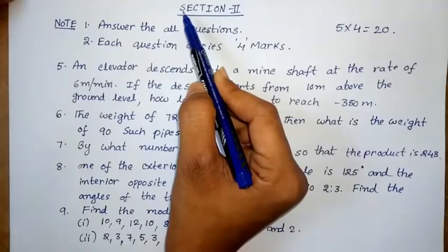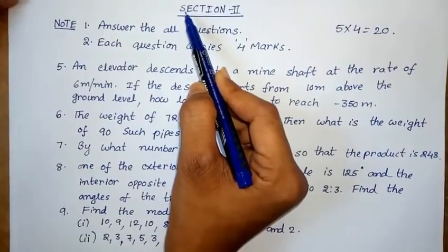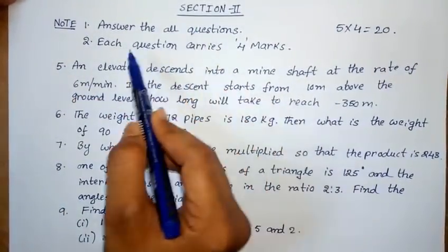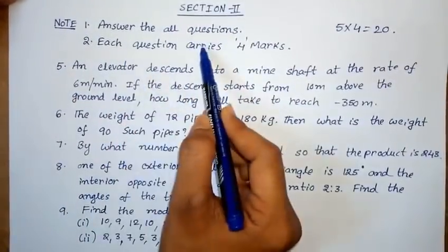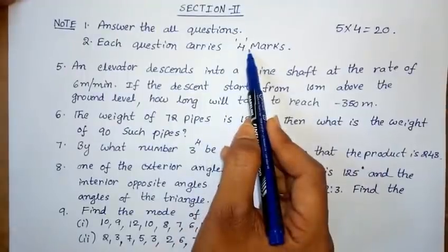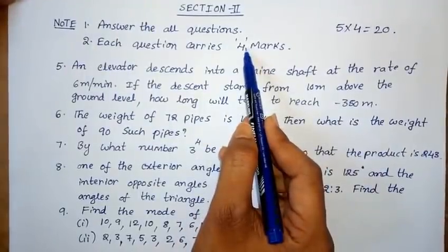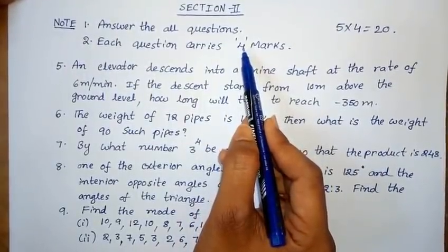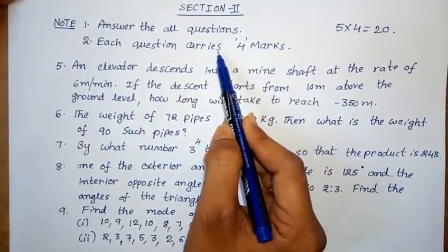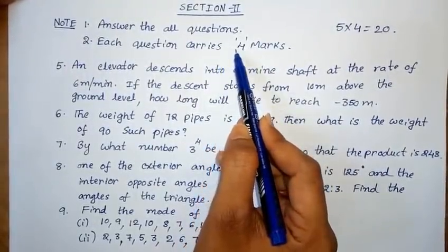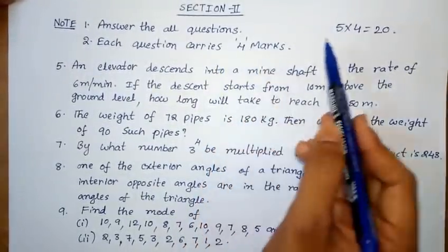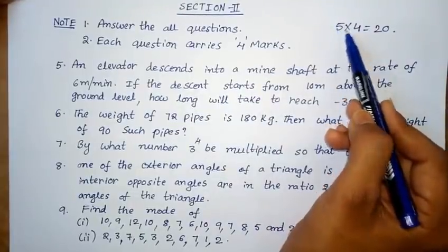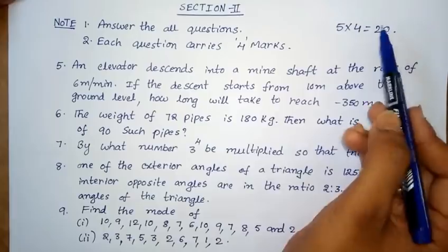Section 2: Answer all questions. Each question carries 4 marks. There are 5 questions, so 5 into 4 equals 20 marks total.